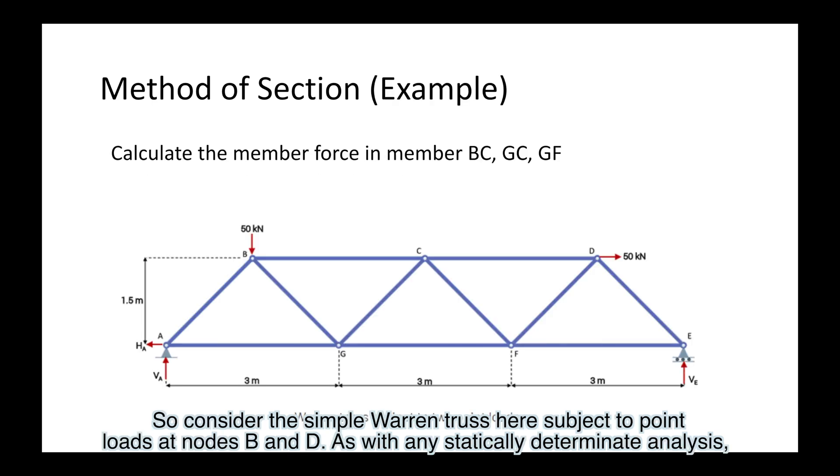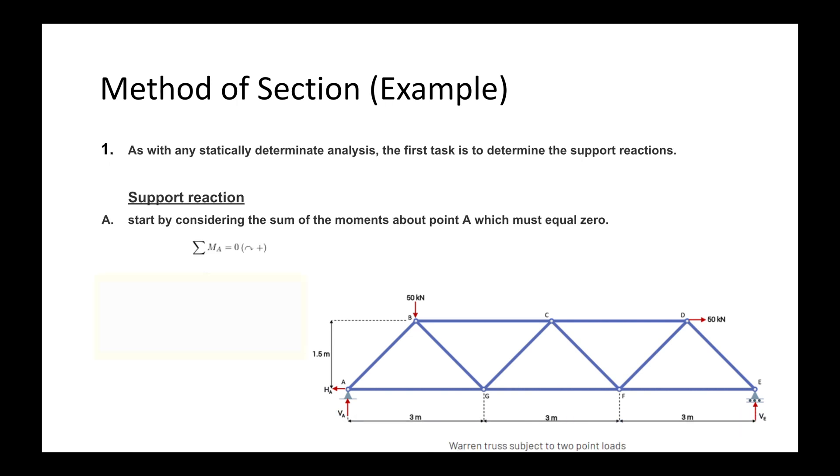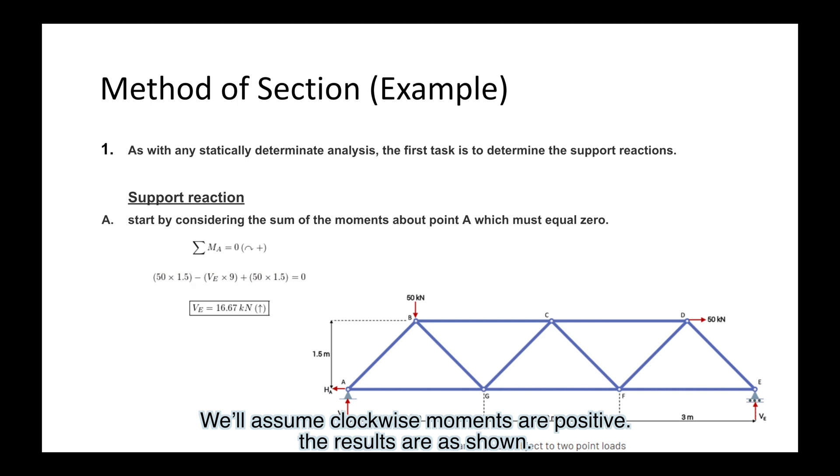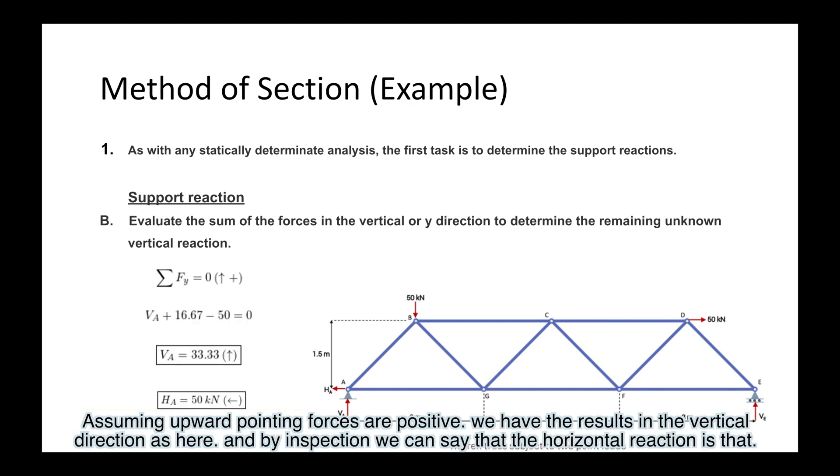So consider the simple Warren truss here subject to point loads at nodes B and D. As with any statically determinate analysis, the first task is to determine the support reactions. We'll start by considering the sum of the moments about point A, which must equal zero. We'll assume clockwise moments are positive. Next we can evaluate the sum of the forces in the vertical or y direction to determine the remaining unknown vertical reaction. Assuming upward pointing forces are positive, we have the results in the vertical direction. And by inspection, we can say that the horizontal reaction is that.